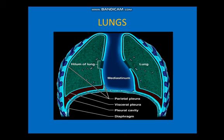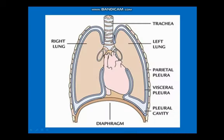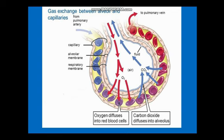The lungs are spongy because of the squamous epithelium and the presence of alveoli. The right lung has three lobes — inferior, middle, and superior — while the left lung has only two lobes: the superior and inferior. Another figure shows the presence of the heart between the two lungs. This is the figure of the alveoli where the exchange of gases actually takes place.